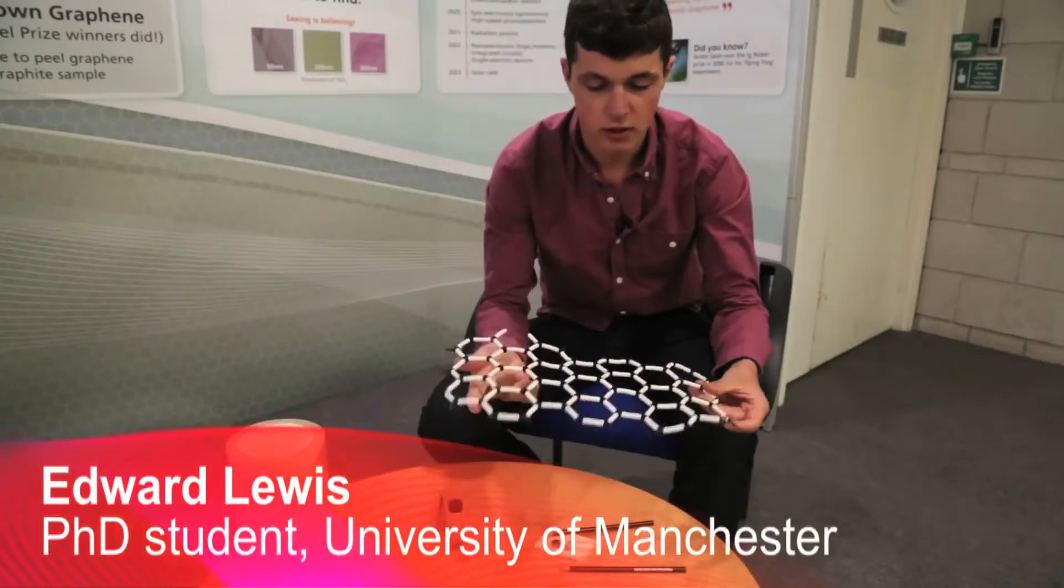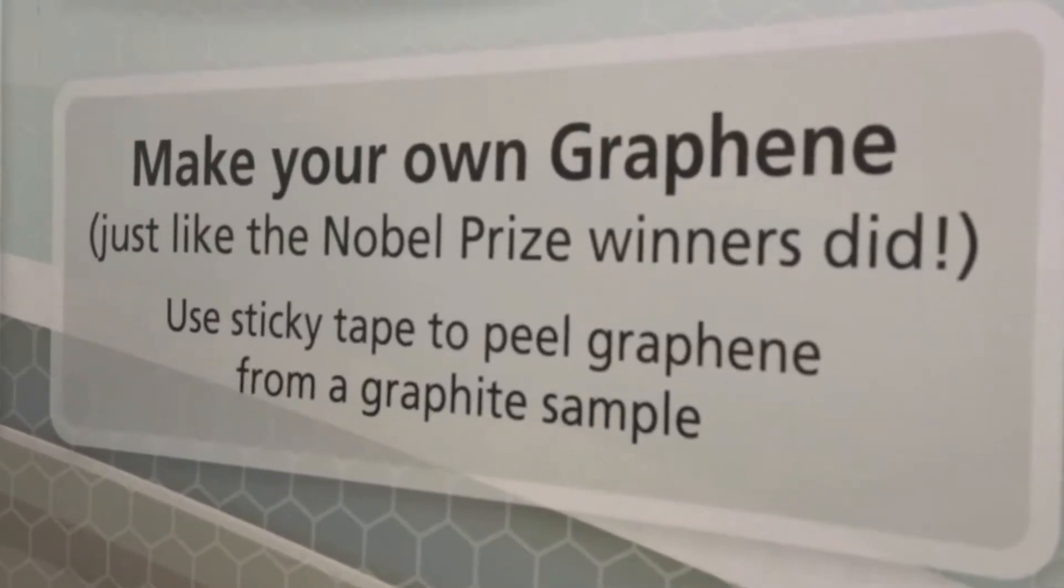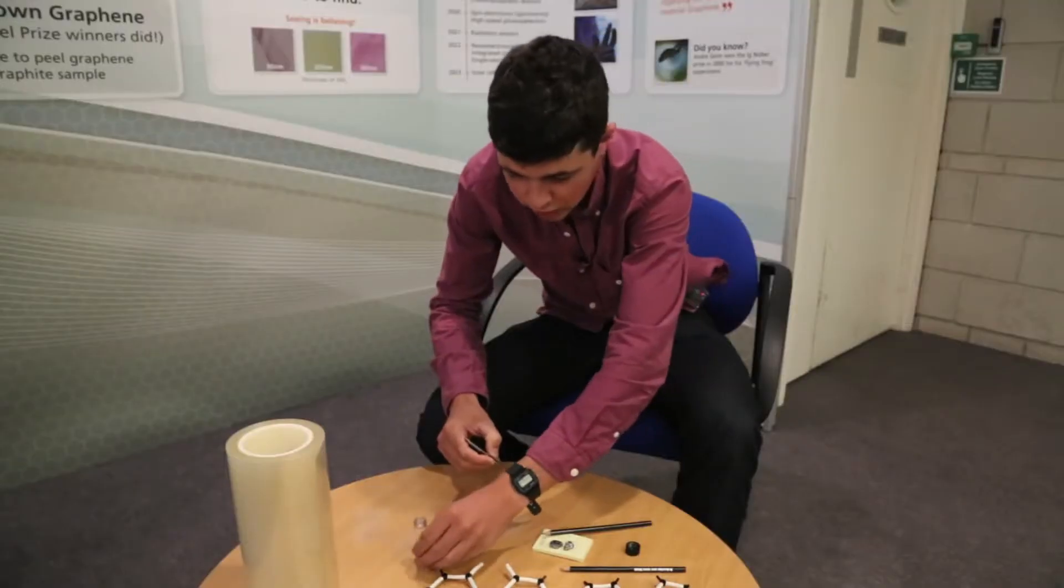How do we go from this layered material to getting a single layer, a layer that's only one atom thick, a layer of graphene? It's actually surprisingly simple. You need to use a simple piece of sticky tape and we use the tape to pull the layers of graphite apart.